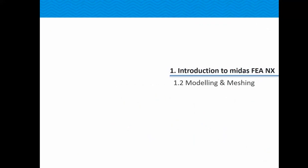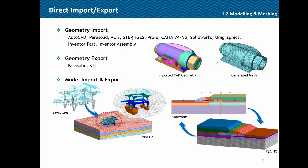Now coming to the modeling and meshing capabilities. It can directly import geometries from various available tools like AutoCAD, Parasolid, ACIS, STEP, IGS, SOLIDWORKS, UniGraphics, and many more. You can also export geometry to Parasolid or STL, and you can import models from existing structural packages like Gen or Civil, and from a 3D model generated here you could export a 2D model to another package like SoilWorks.